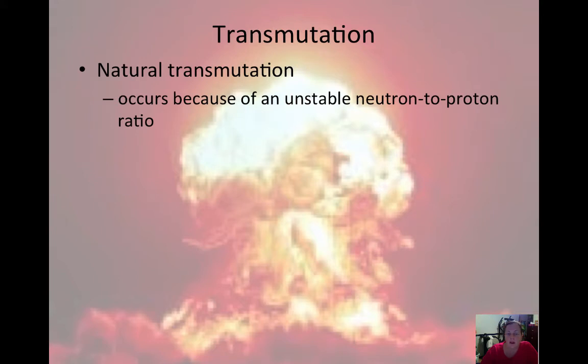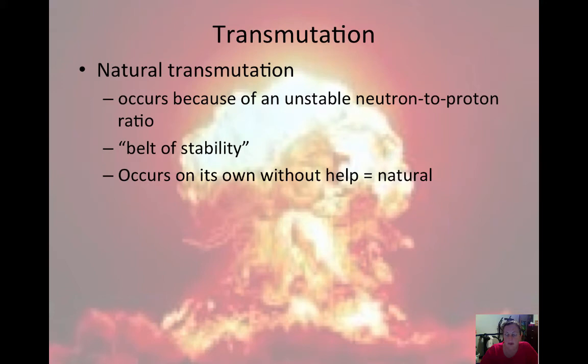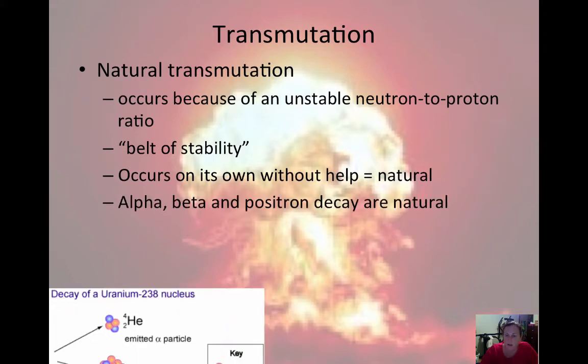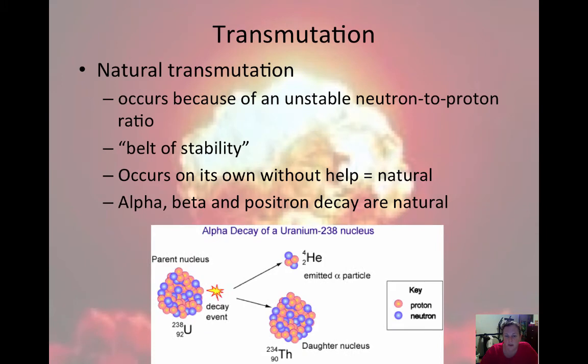So natural transmutation occurs because of an unstable neutron-to-proton ratio, so that's the belt of stability. When our atom is not on the belt of stability, it will be radioactive and it wants to become stable. So it will emit a particle that will bring it to a more stable state. It occurs on its own without any help, which is what makes it natural. And alpha, beta, and positron decay all are considered natural transmutations.